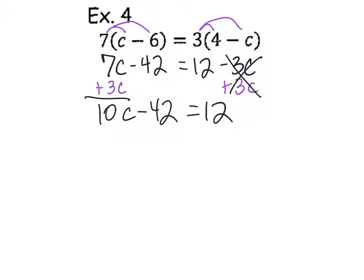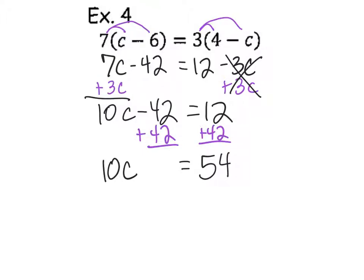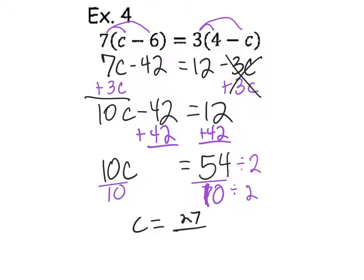What about the 42 and the 12? I want the 12 to stay on the right, so I don't want to subtract 12. So add 42 to both sides — 10C equals 54. Then divide by 10. 54 and 10 — 2 goes into both. 54 cut in half is 27; 10 cut in half is 5. The answer is 27 over 5.